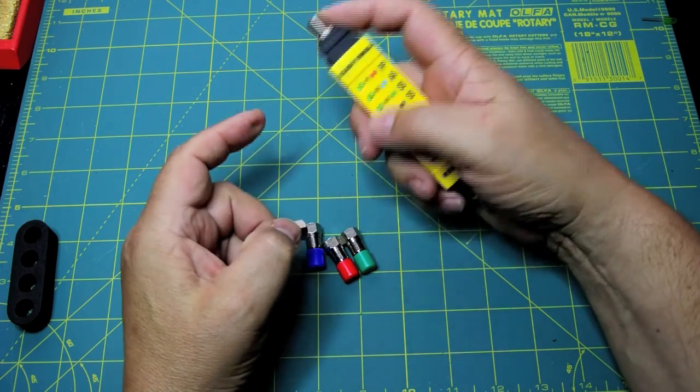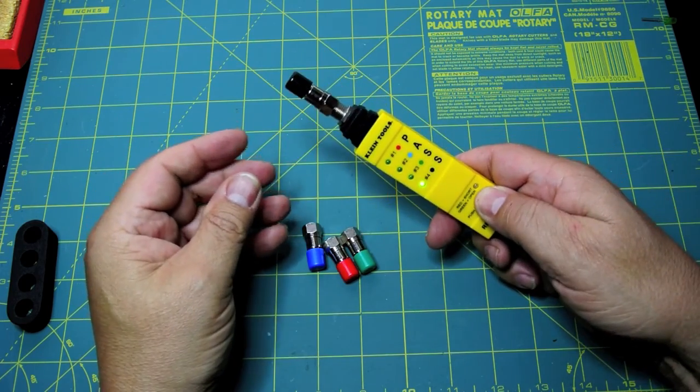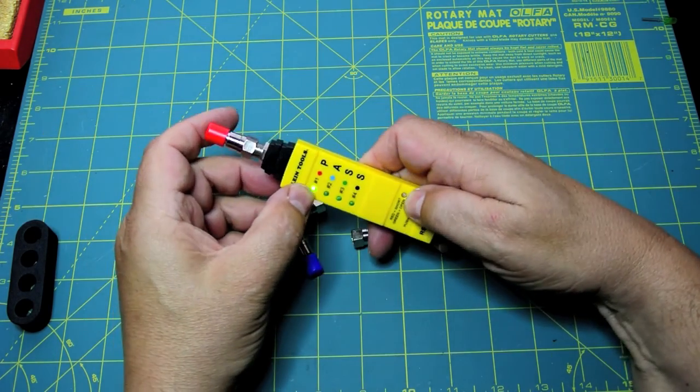And then this goes on the other end that you want to test. And then you just push the test and you see it's detected the black one. So you see the green light for red.